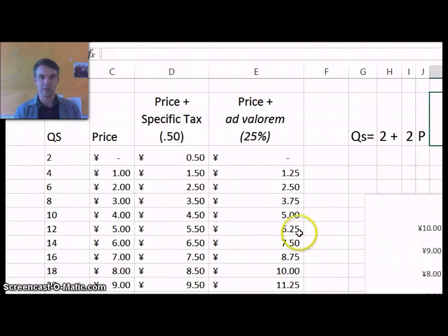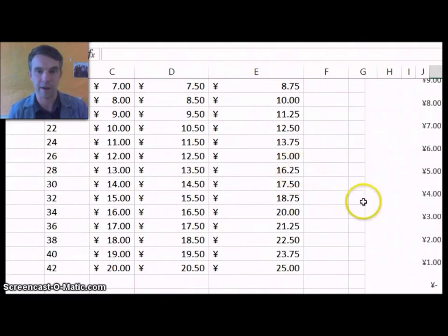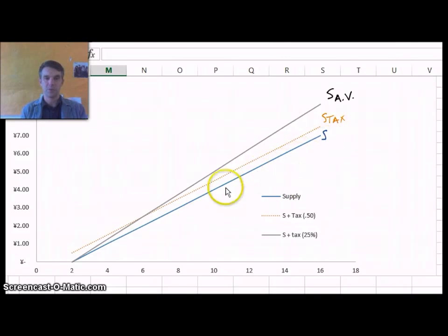So let's go ahead and look at what that looks like on a diagram. What we can see is here's the original supply curve in blue. The specific tax of 50 cents has shifted the original supply curve up by 50 cents. So the vertical distance between each of these would be a distance of 50 cents on the y-axis.